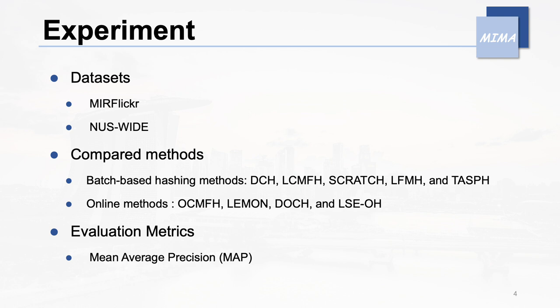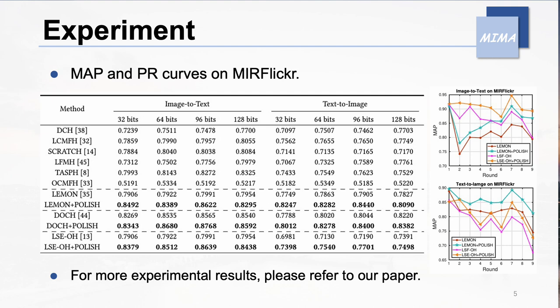We conducted extensive experiments on two widely used benchmark datasets, MIR Flickr and NUS-wide. Similar to previous methods, we employ mean average precision as the evaluation criterion for assessing performance. We present the MAP results for the final round on MIR Flickr in the table, and the figure provides an illustrative presentation of MAP results for several methods across each round.